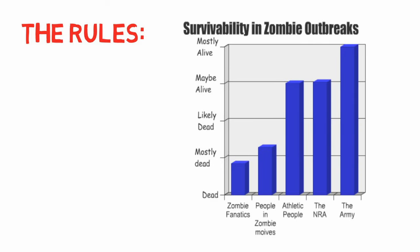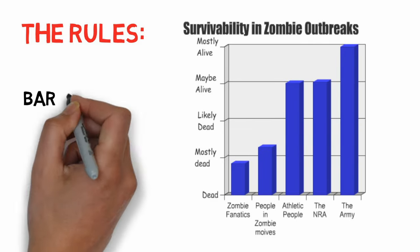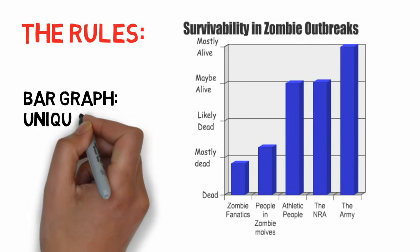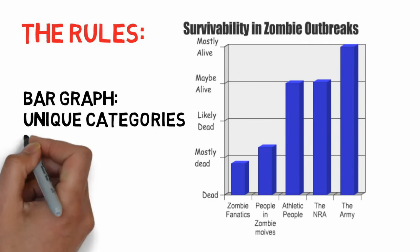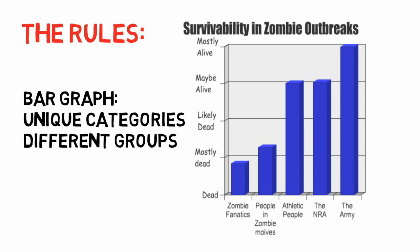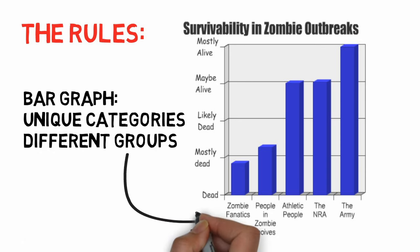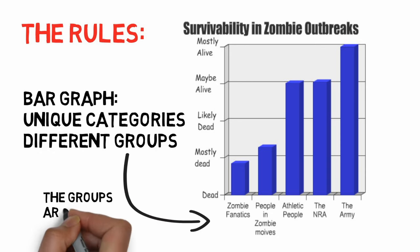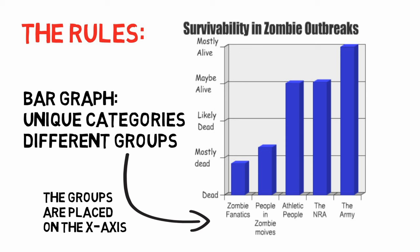First you have to know the graphing rules. Bar graphs are used to display data with unique categories, trying to show the difference between the groups — like with this graph, which shows survivability in zombie outbreaks.